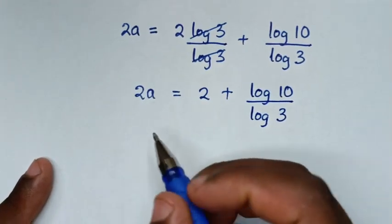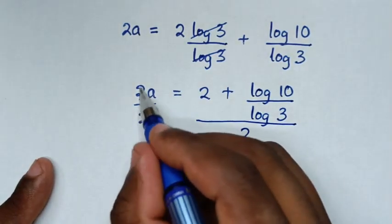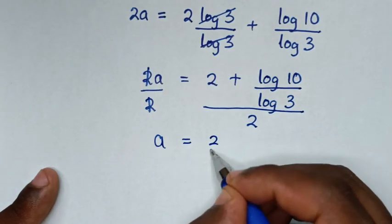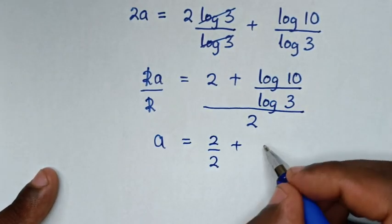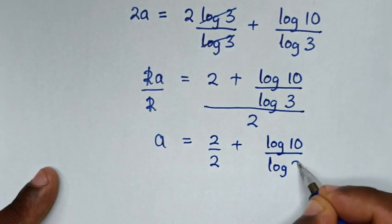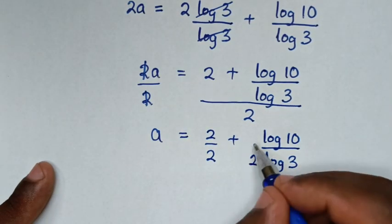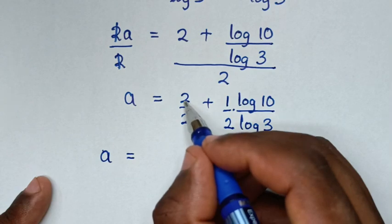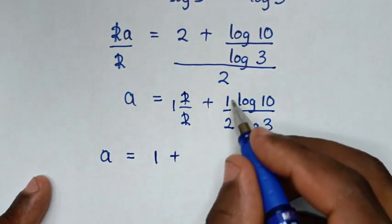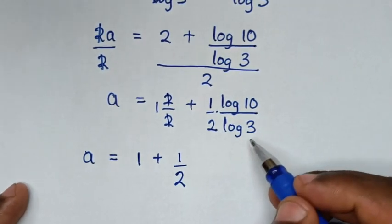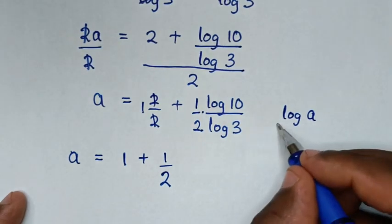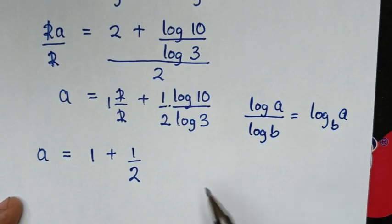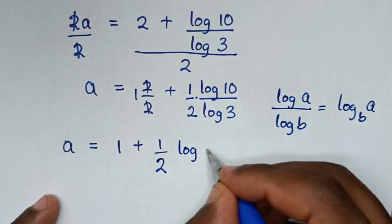Then we divide by 2 on both sides. The 2s cancel, so a equals 1 plus one half times log(10)/log(3). Now log(10)/log(3) is in the form log(a)/log(b) which equals log base b of a, so log(10)/log(3) is the same as log base 3 of 10.